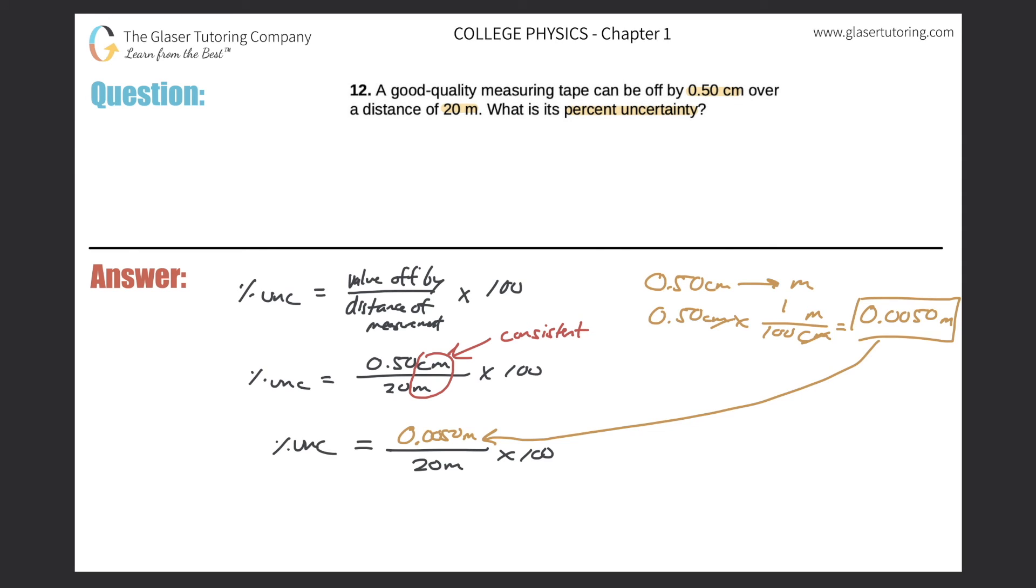And now just plug that into the calculator, 0.0050 divided by 20 times 100. And the value comes out to be 0.025%. And that would be the final answer.